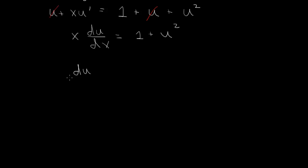So we have du over 1 plus u squared. And that's equal to dx over x, right? dx divided by x.